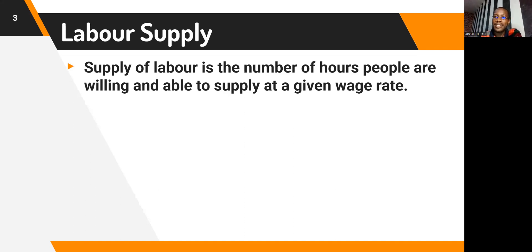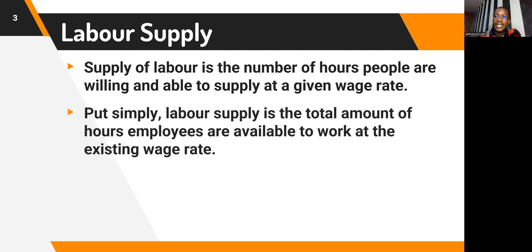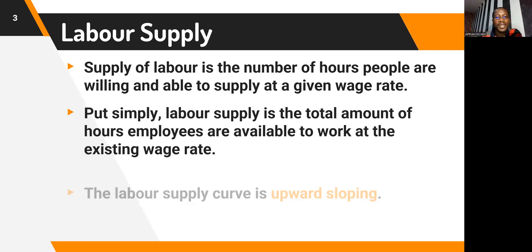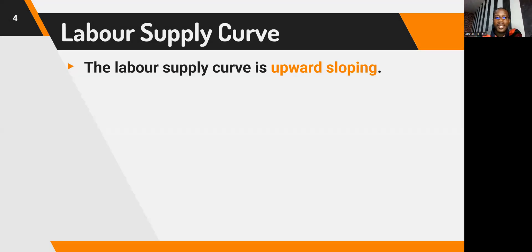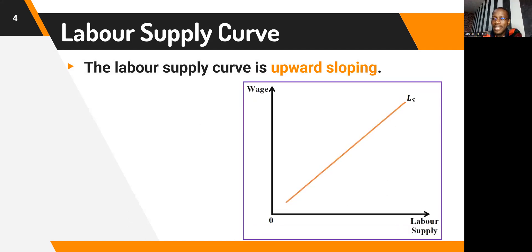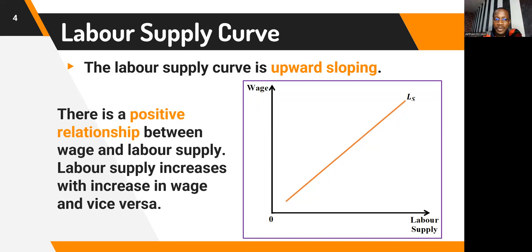Supply of labor is the number of hours that people are willing and able to supply at a given wage rate. Simply put, labor supply is the total amount of hours employees are available to work at the existing wage rates. The labor supply curve is upward sloping — it is positively sloped, expressing a positive relationship between wage and the supply of labor.